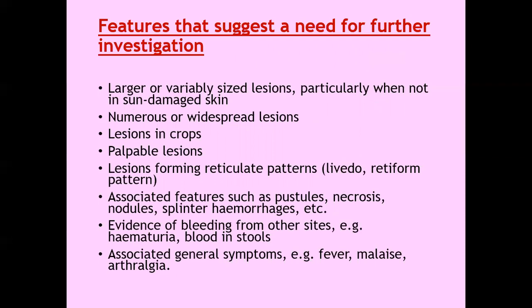Features that suggest a need for further investigation: larger or variably sized lesions, particularly when not in sun-damaged skin; if lesions are numerous or widespread; if lesions are coming in crops; if lesions are becoming palpable; if lesions are forming a reticulate or livedo retiform pattern; or if there are associated features like pustules, necrosis, nodules, or splinter hemorrhages under the nails; evidence of bleeding from other sites such as hematuria and blood in the stools; or associated general symptoms like fever, myalgias, or arthralgias.